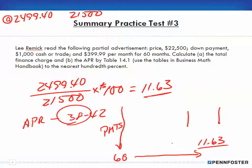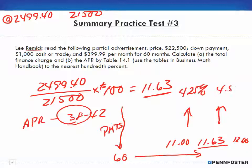Most often that value will fall between two columns. For example, it might fall between eleven and twelve — check the actual chart for the exact figures. Look up those columns to the top to find the corresponding interest rates. You'll find that eleven sixty-three falls between four and a quarter percent and four and a half percent, so the APR falls between four point twenty-five and four point five percent. That's how you find it using the table. We'll pick up in the next video.